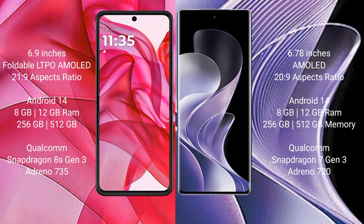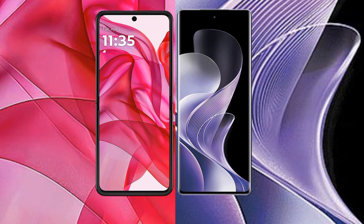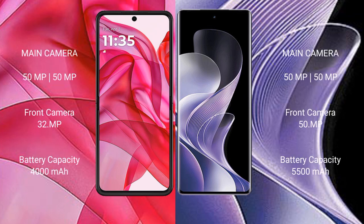The vivo V40 comes with 8GB or 12GB RAM and 256GB or 512GB internal storage, powered by a Qualcomm Snapdragon 7 Gen 3 processor with Adreno 720 GPU. The Motorola RAZR 50 Ultra features a dual rear camera setup with 50MP and 50MP lenses, and a 32MP front camera.